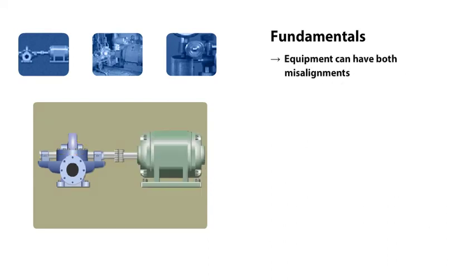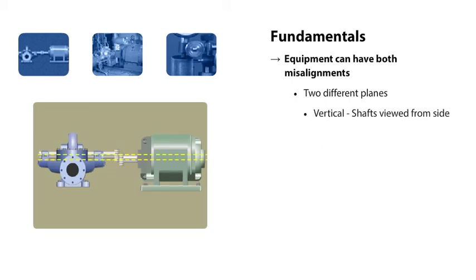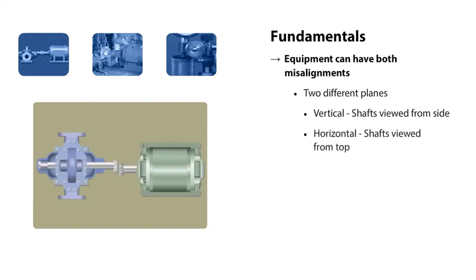Equipment can have both angular misalignment and parallel misalignment, and both types can be present in two different planes: vertical and horizontal. In order to see misalignment in the vertical plane, the shafts must be viewed from the side. To see misalignment in the horizontal plane, the shafts must be viewed from the top.